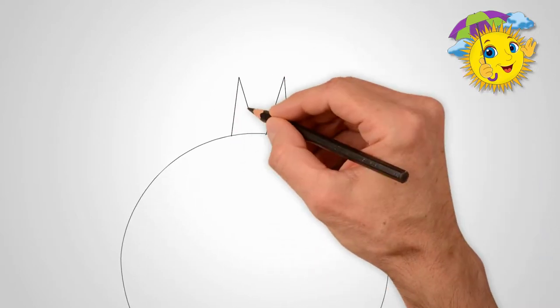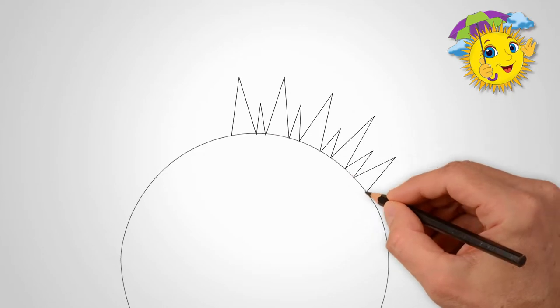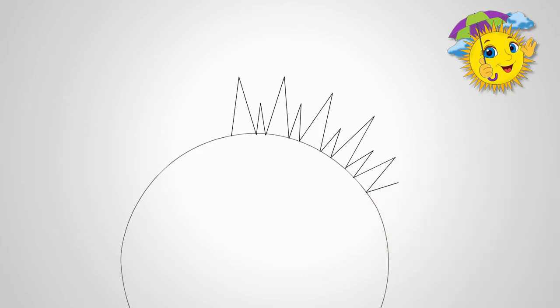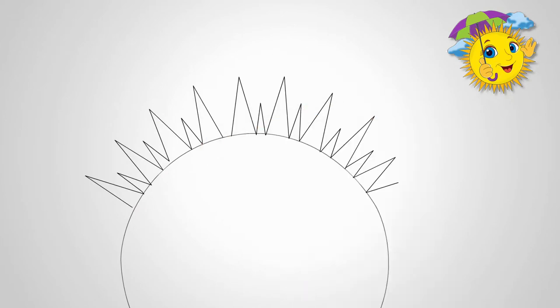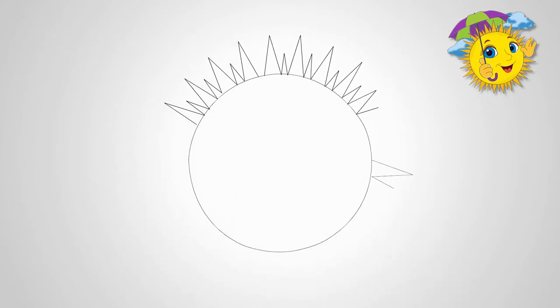First, draw a circle. The sun is a circle. We draw the rays of the sun around the circle. Draw the rays around. They are different lengths and different widths. The sun has a lot of rays.